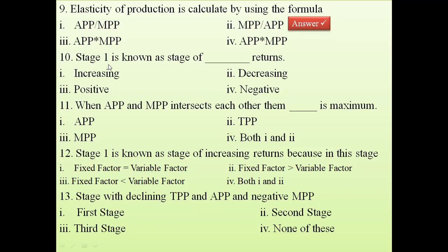The tenth question: Stage one is known as the stage of increasing returns. Variable factors are less, so the more and more variable factor you add, the more return you get. That is why stage one is always the stage of increasing returns.